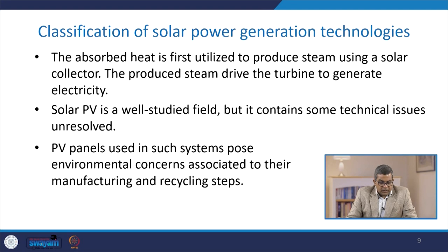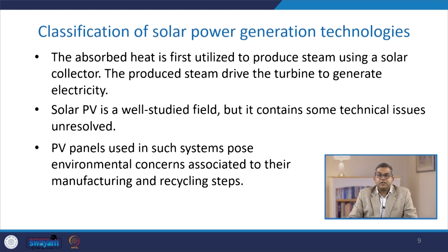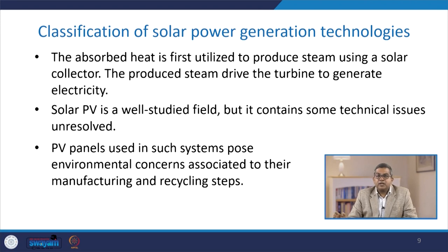The absorbed heat from the sun is first utilized to produce steam using a solar collector. The produced steam drives the turbine to generate electricity.